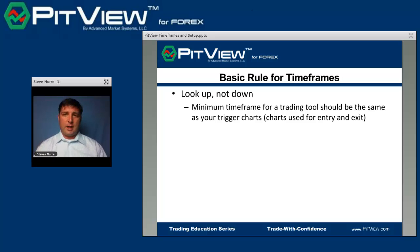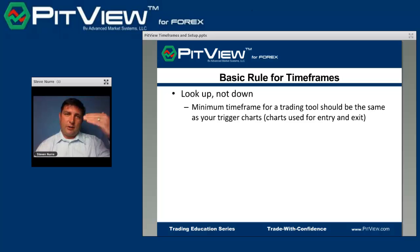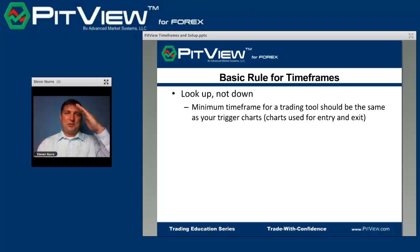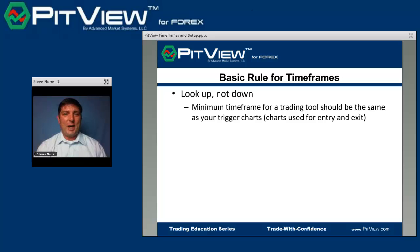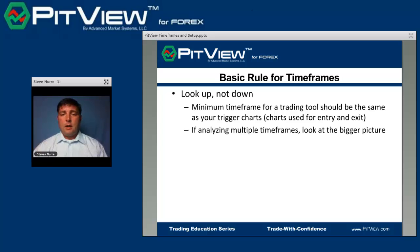If you trade from a one-hour chart, then that's your minimum time frame for analysis because you're making all your decisions off that time frame — that's what your trigger chart is. For example, if you're trading a one-hour chart and looking at prevailing trends, you're probably not going to look at a one-minute stochastic, because that will be very sporadic and screw up your trading. The other part of 'look up not down' is: if you're analyzing multiple time frames, you want to look at the bigger picture.